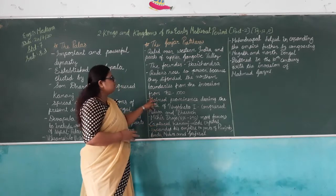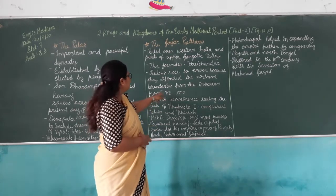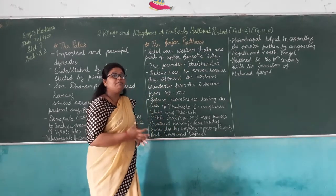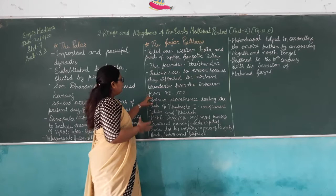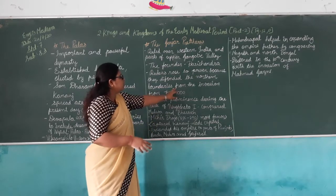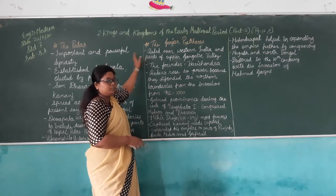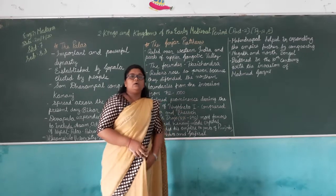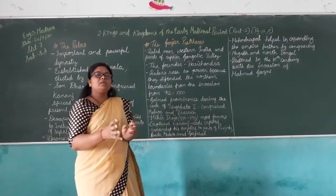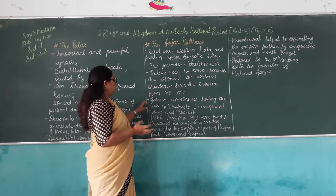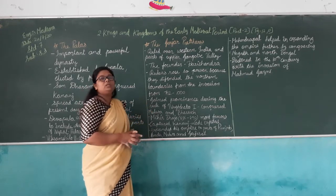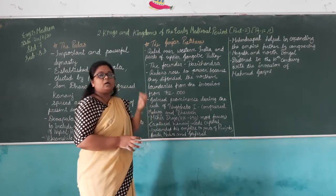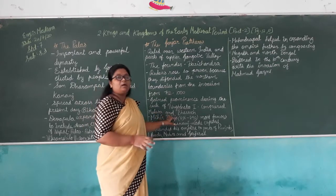When invaders came to the northern boundaries, the Gurjara Pratiharas defended and defeated them, thereby expanding their kingdom. They gained prominence during the rule of Nagabhata I, who conquered Malwa and Bharuj.